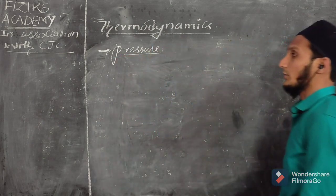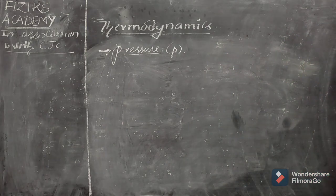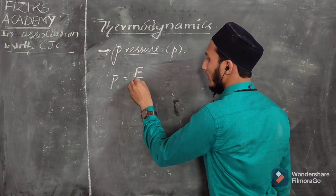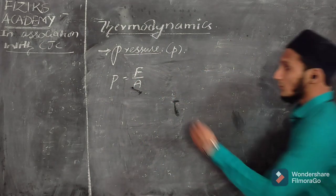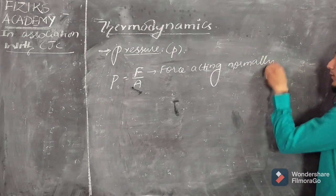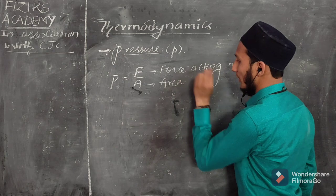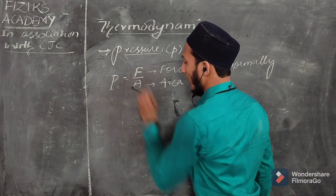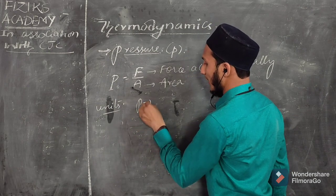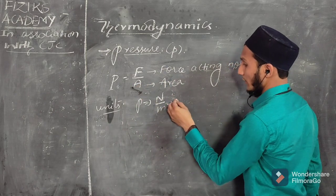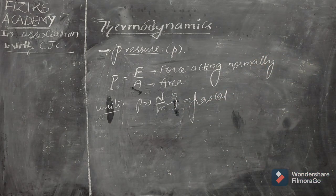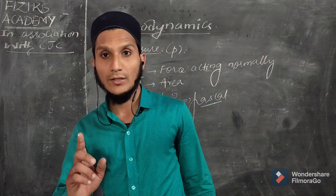The next basic quantity is pressure, indicated by P. Pressure is nothing but the force which is acting in a perpendicular manner — the force acting normally on a given surface of area A. This is defined as pressure. Its unit: since force is measured in Newton and area is measured in metre square, pressure is measured in Newton per metre square, which is also called Pascal.